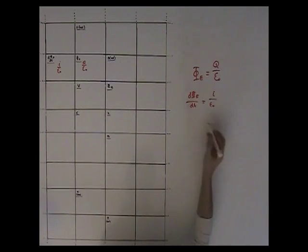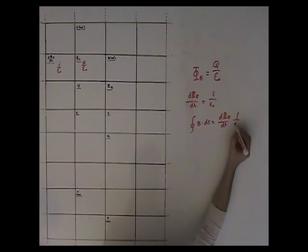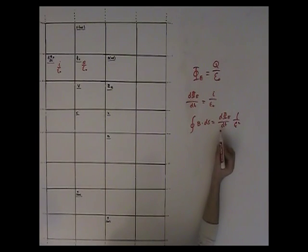And then we know that circular integral of B dot Ds equals D flux E DT times 1 over C squared. And D flux E DT, well, if we write that out now, we've got I over Epsilon Knot C squared.